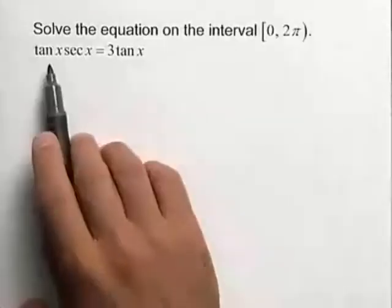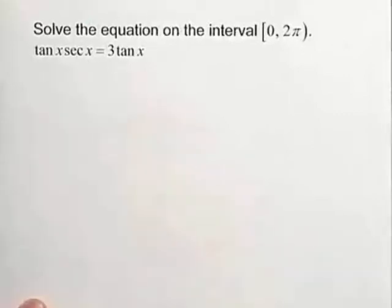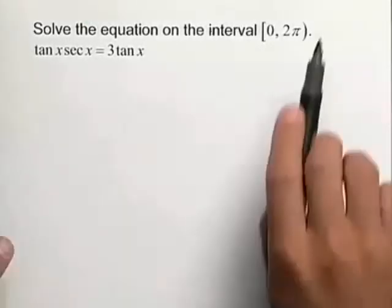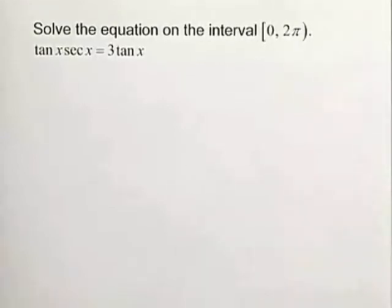Let's solve the following trig equation. We have the tangent of x times the secant of x that's equal to 3 times the tangent of x, and we're looking for our solution between 0 and 2 pi radians.